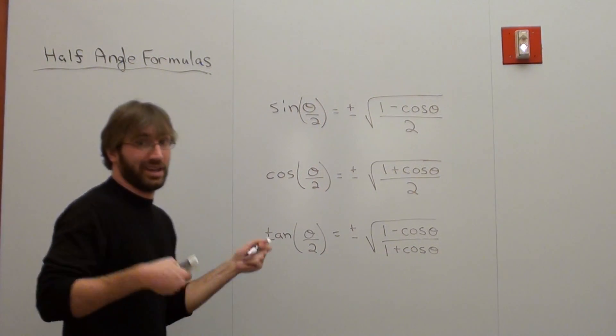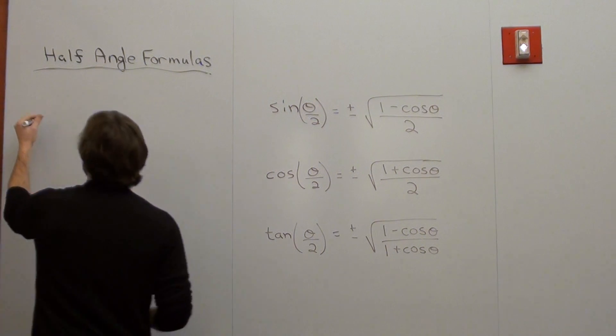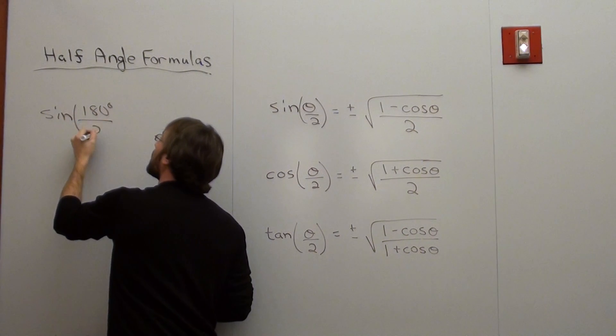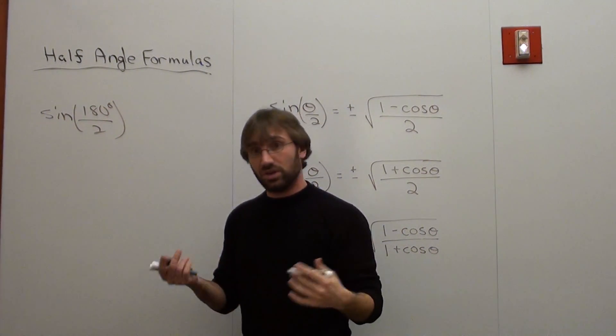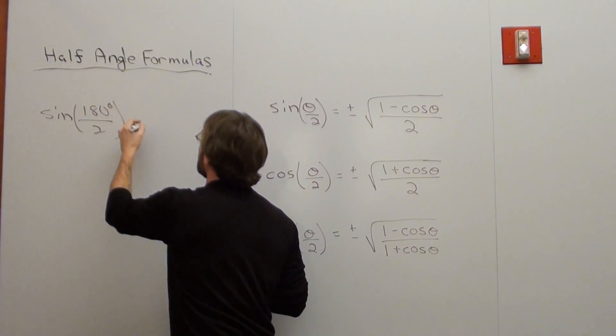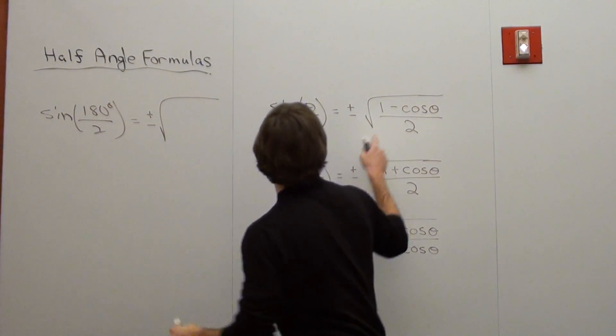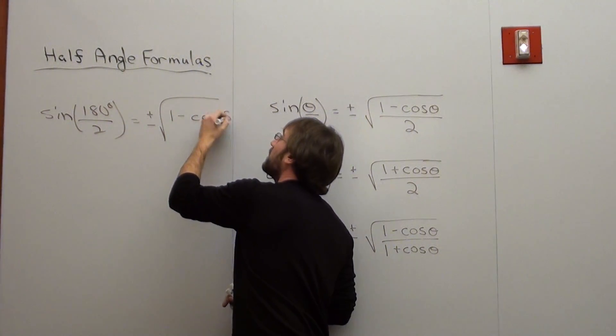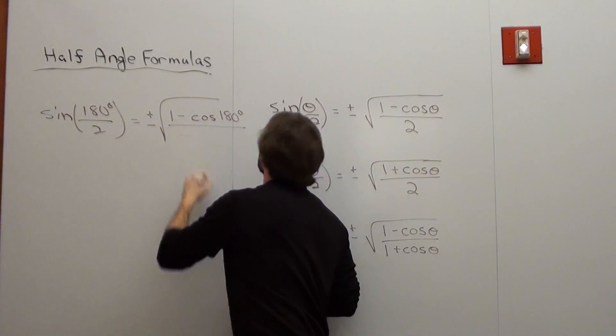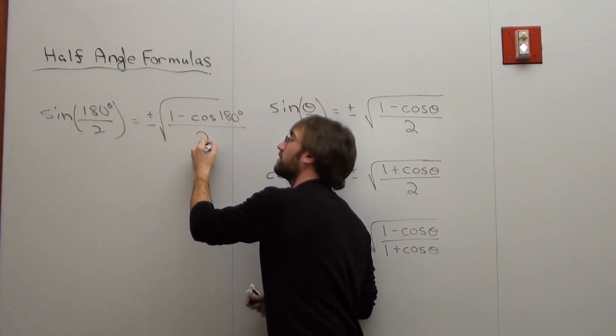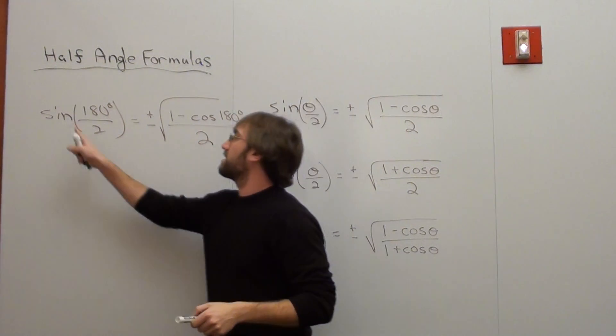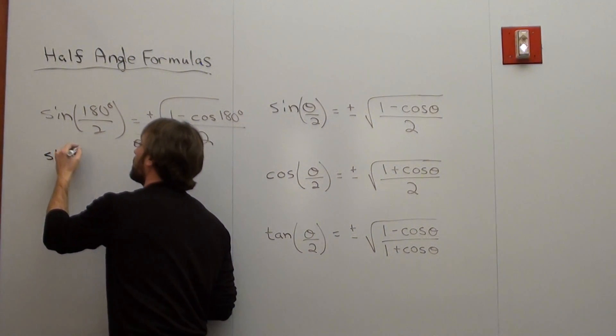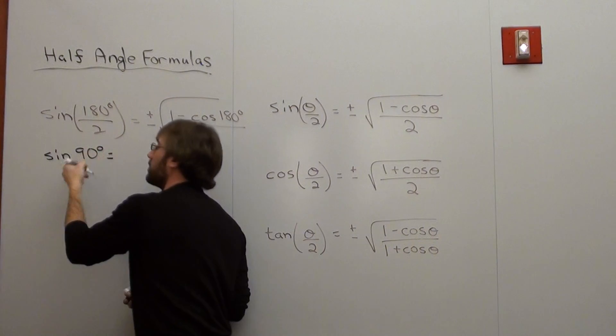So when I do that, I'm going to substitute 180 for my theta. I've got the sine of 180 degrees over 2, and it's equal to plus or minus square root of 1 minus the cosine of theta. So it's 1 minus the cosine of 180 degrees, all over 2. Let's see what happens. Sine of 180 over 2 is actually the sine of 90 degrees, which is going to be 1.